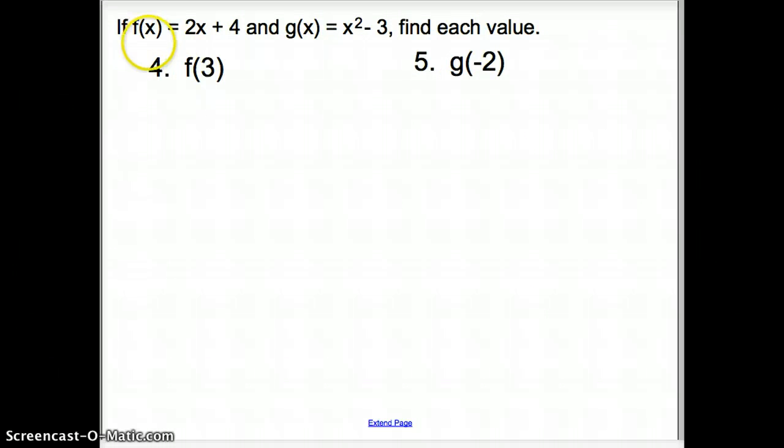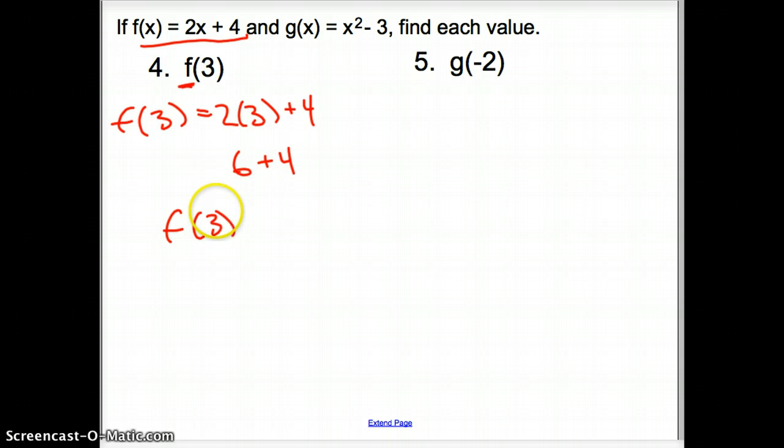Now, if we're given some equations, f of x, and now we read this f parenthesis x as f of x equals 2x plus 3 and g of x equals this. Let's find each value. Well, when we look at 4, we have f of 3. Since we are given this f, we are going to use that equation. So, to be mathematically correct when you write it out, you can put f of and then this 3 instead of x because this 3 is going to replace that x. So, I'm putting this 3 in for this x because this 3 takes the place of all the x's. So, I'm going to go 2 times 3 plus 4. 2 times 3 is 6 plus 4. So, f of 3 is 10.